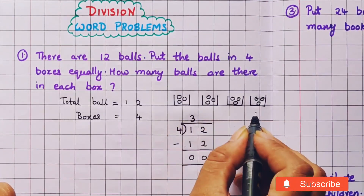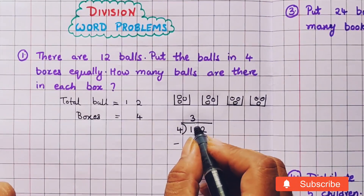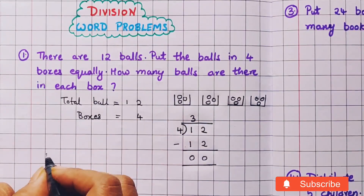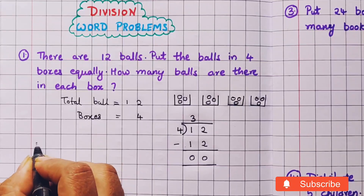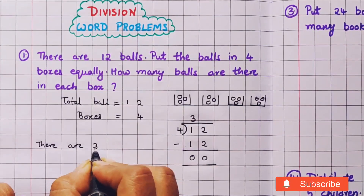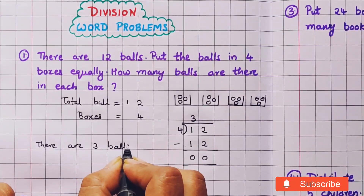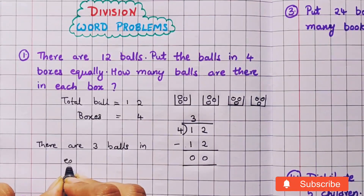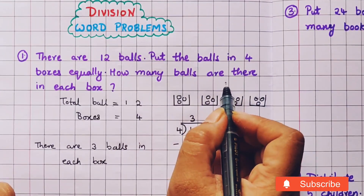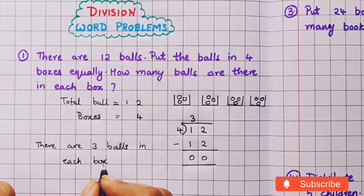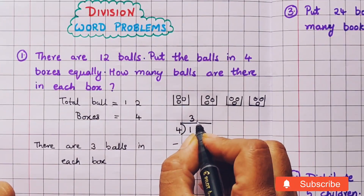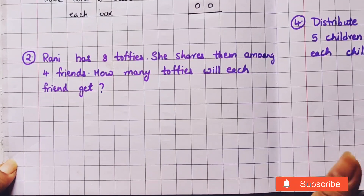12 divided by 4 is 3. So how many balls are there in each box? How do we write this in statement form? There are 3 balls in each box. From the last statement of the question, we write the answer statement, and this answer is called the quotient.